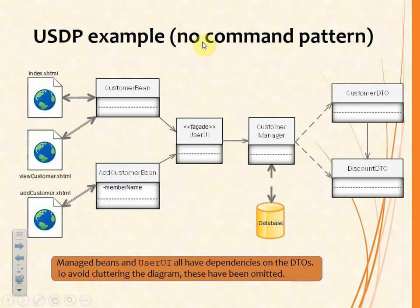Now let's add in the command pattern. Most of these design patterns when you're using the USDP will not feature until you get to the class diagram. So with the USDP you'll start off with your use cases and activity diagrams, then your analysis model. From the analysis model you will then derive a class diagram — that's your initial class diagram. Then you start to think about design patterns, and when you decide you want to use a facade you either pick on one of the existing classes to become the facade or you write an additional class that is the facade.